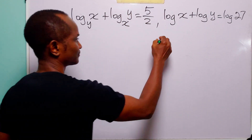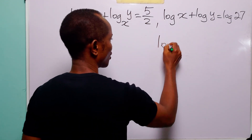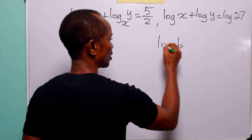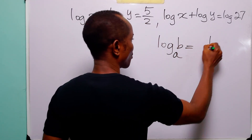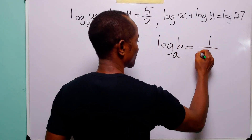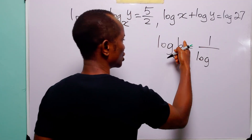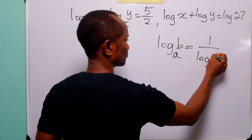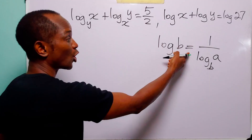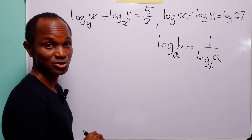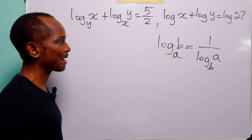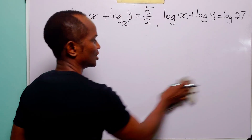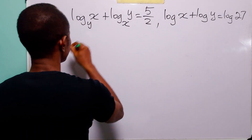All you need to remember to simplify this first equation is the identity: log to base a of b is equal to 1 over log to base b of a. This is all you need to remember, and when you apply this identity to the first equation,